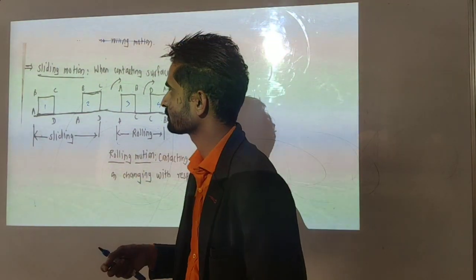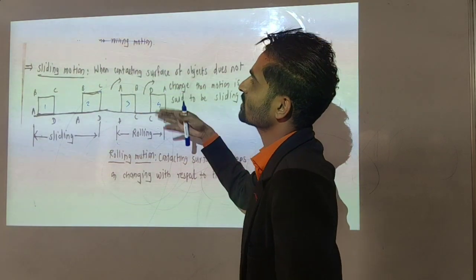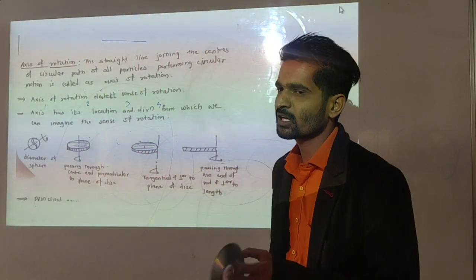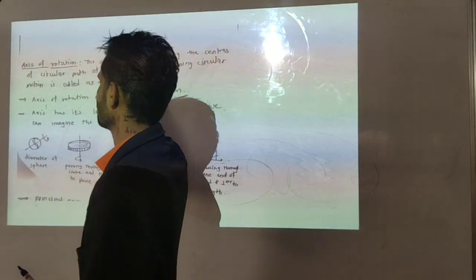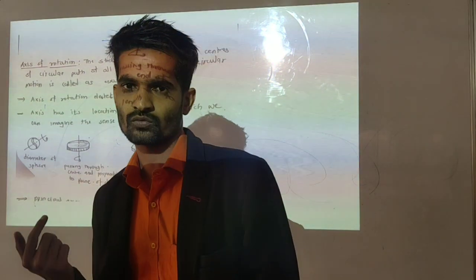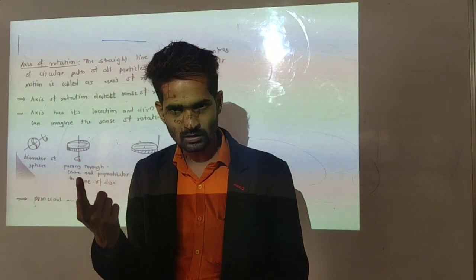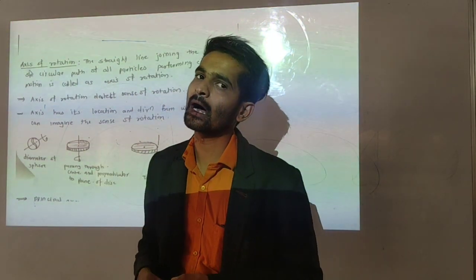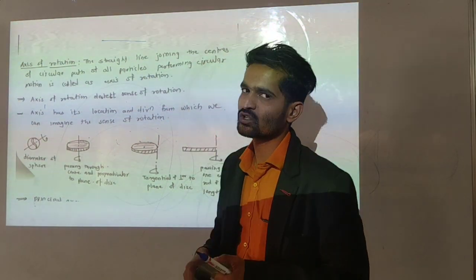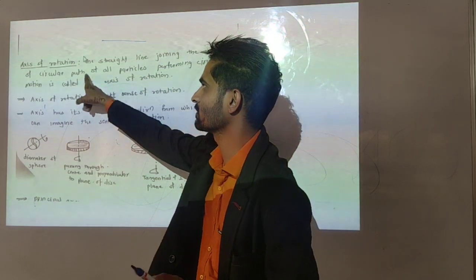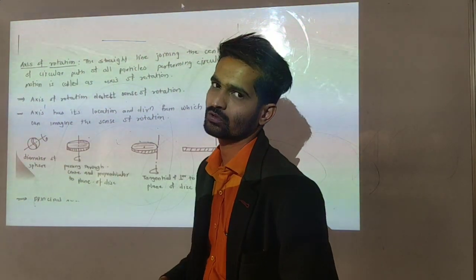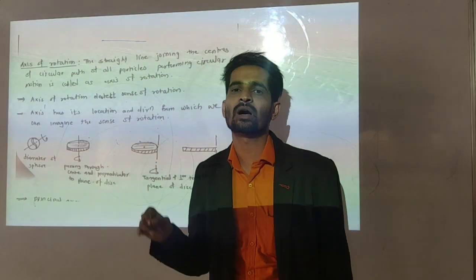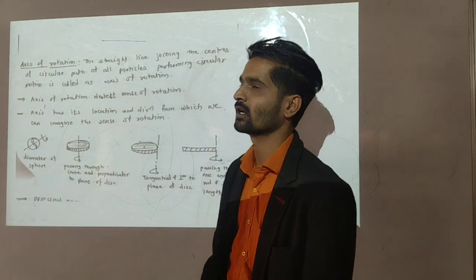After that, we move ahead with sliding motion. Now we have seen the axis of rotation. The axis of rotation: in rotational motion, all the particles are performing circular motion. Every particle performs a circular path, and each circle has a center. All those centers align on the same straight line — that straight line is called the axis of rotation. The straight line joining the centers of circular paths of all the particles performing circular motion is called the axis of rotation.